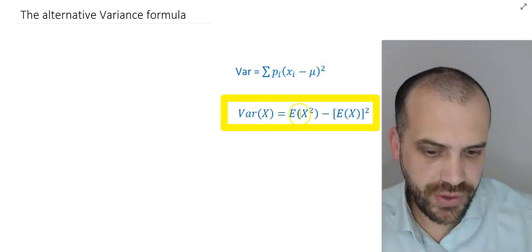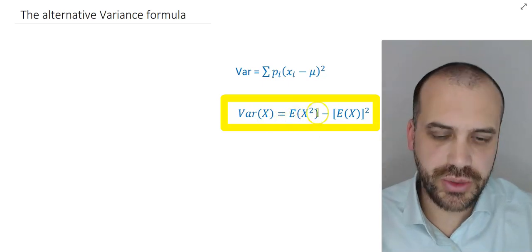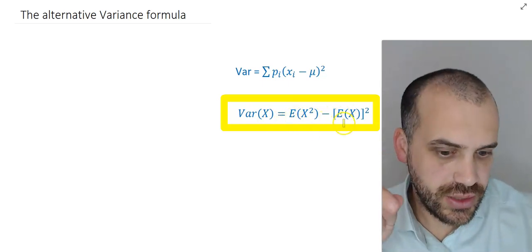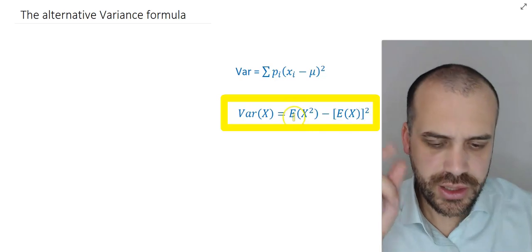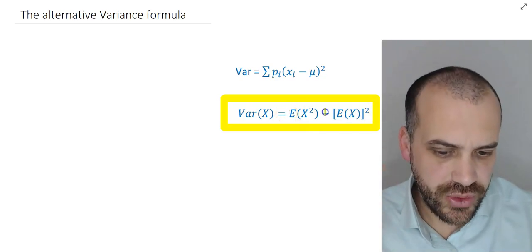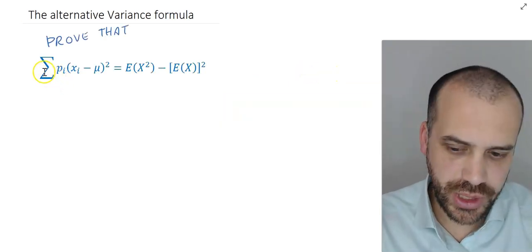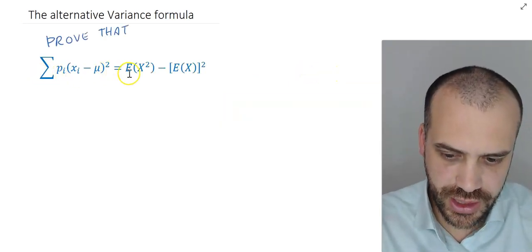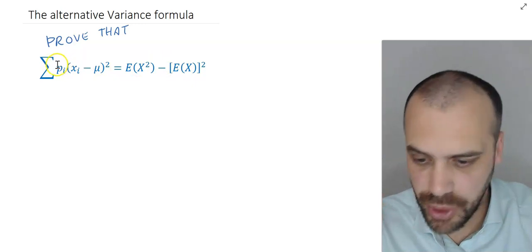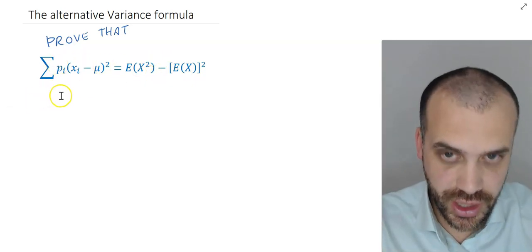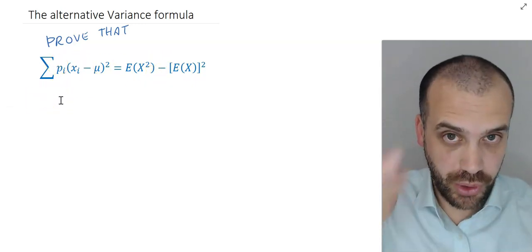This one here. Variance of x is equal to the expected value of x squared minus the expected value squared. So I really want to show you why this is equal to this. That's what we're going to do here. We're going to prove that this thing is equal to this thing. These are both formulas for variance. I just want to show you that they are both the same.